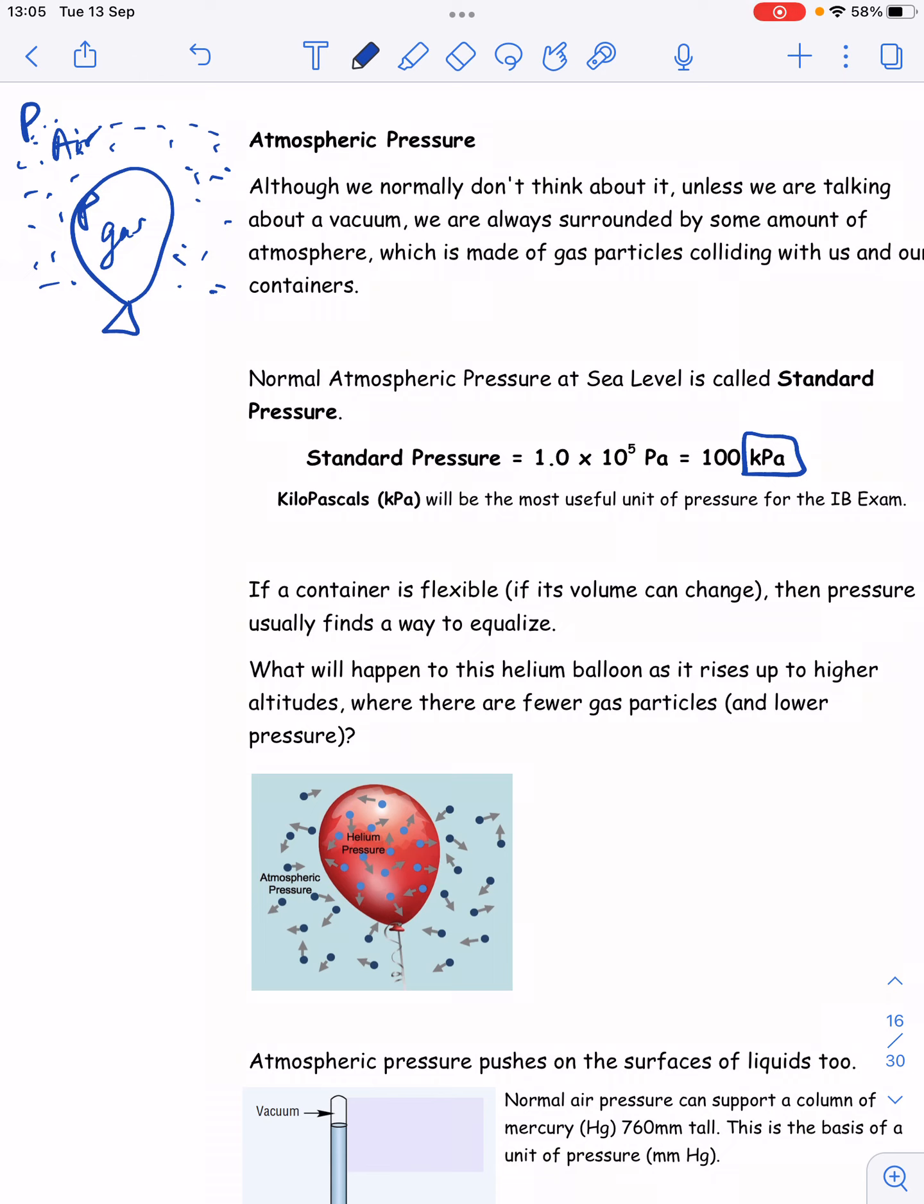Now those two pressures find a way of equalizing. So the air on the outside pushes in, the gas particles collide with the surface of the balloon, and the gas particles on the inside of the balloon collide with the inside of the balloon, and they push back out. And so what we find is that pressures tend to equalize when you have two containers. Pressure on the inside, pressure on the outside tend to find a way to equalize, unless the container is of a fixed volume, a fixed size, and so then it can't equalize.